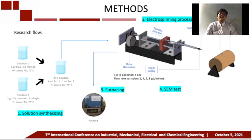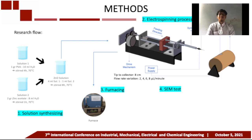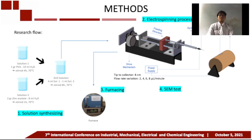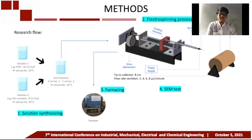The process begins by synthesizing a solution consisting of a mixture of polyvinyl alcohol solution with zinc acetate solution. The final solution is put into a syringe pump with a capacity of one milliliter, then installed in the electrospinning machine. The syringe containing the solution is connected to the positive pole of a high voltage source and placed at a fixed distance of eight centimeters from the FTO glass on the rotating collector, which is connected to the negative pole to attract the solution to the FTO glass in the form of nanofibers.